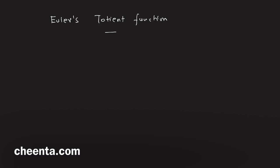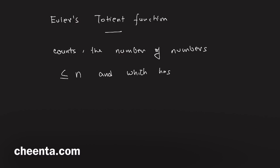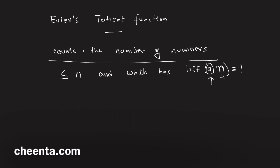One example of a multiplicative function is Euler's totient function, which we discuss in our number theory module as well as in our group theory module. Euler's totient function counts the number of numbers less than or equal to n which have HCF 1 with n. So if a is the number and the HCF of a with n is 1, we count all such numbers — that's what Euler's totient function does.